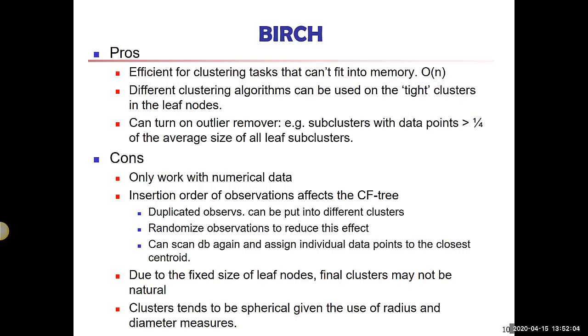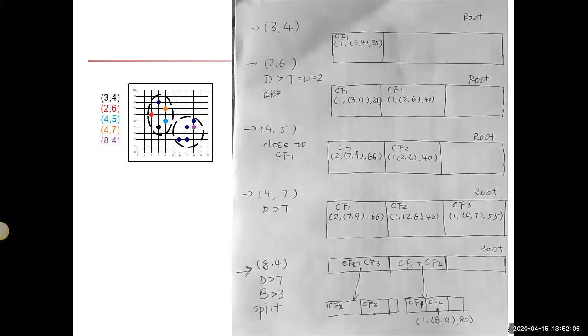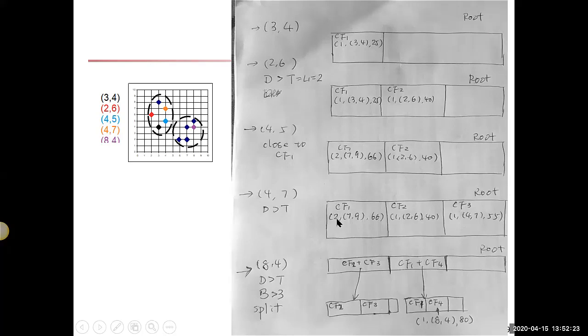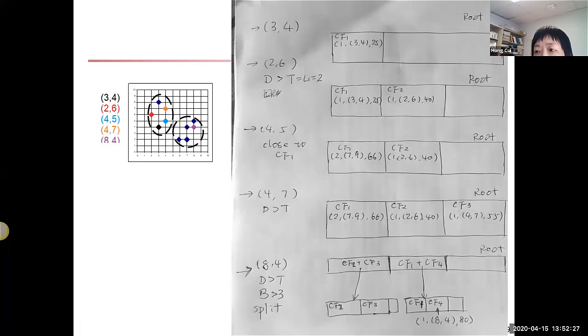How about the number of clusters? Should we choose the number of clusters? No, we don't. The tightness is controlled by T. This is what you use to influence how many final clusters you're going to get. I think this is an advantage because nobody knows how many clusters the data has. We should let the data tell the story.